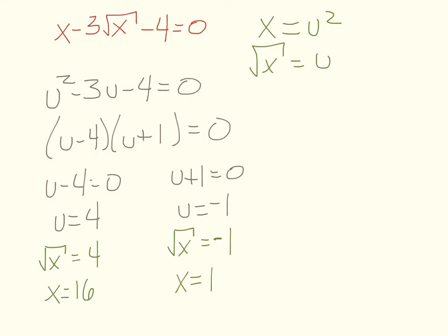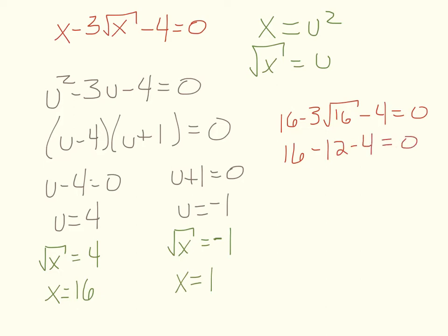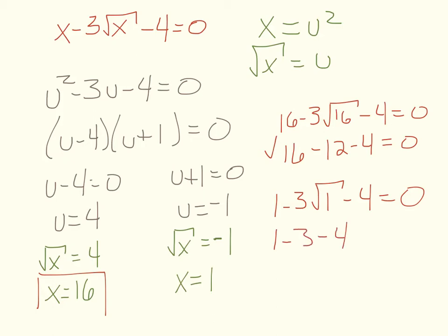Checking x equals 16: we get 16 minus 3 times the square root of 16 minus 4, which is 16 minus 12 minus 4 equals 0 — that's 4 minus 4 equals 0. So x equals 16 is a valid solution. Checking x equals 1: we get 1 minus 3 times radical 1 minus 4, which is 1 minus 3 minus 4, giving negative 6, not zero. So x equals 1 is an extraneous solution, and there is only one solution.